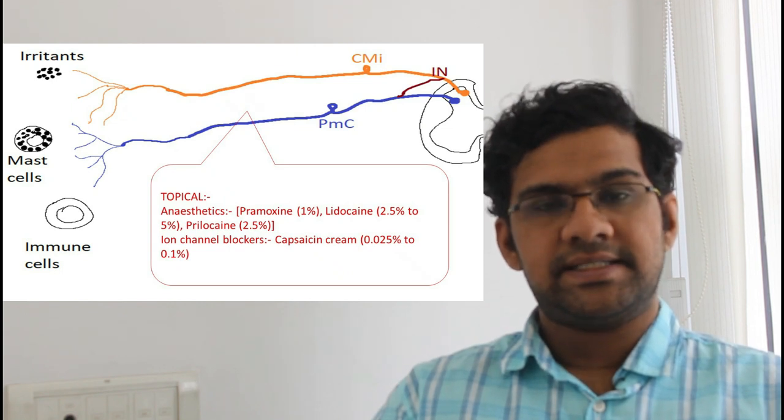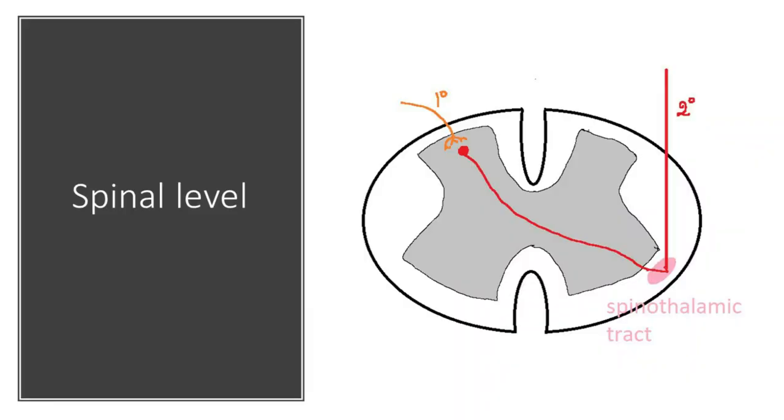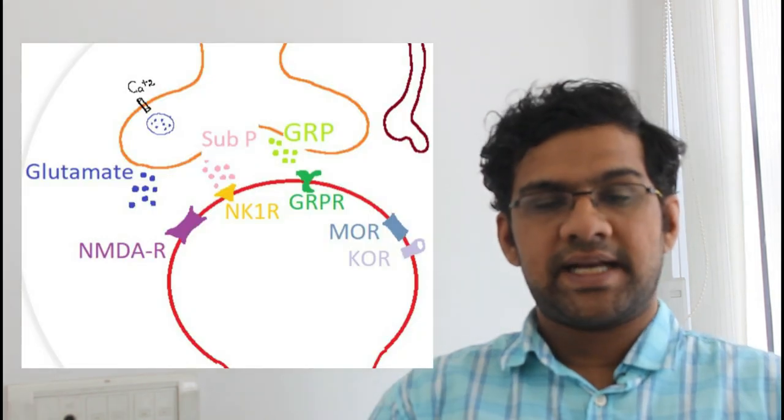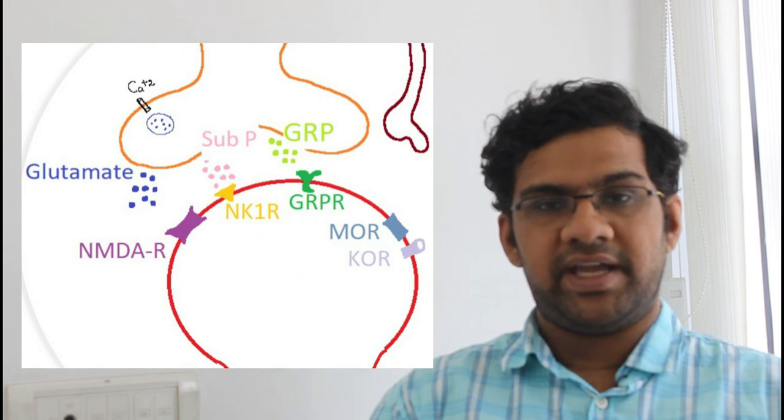At the spinal level, the second degree neurons originate from the dorsal root horn where the first degree neurons end forming a synapse. They cross the opposite side of the spinal cord, go into the white matter, and ascend upwards through spinothalamic tracts and spinoparabrachial tracts.